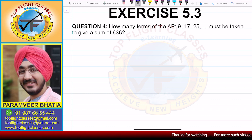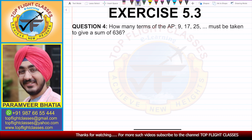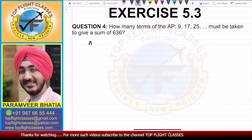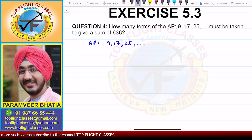Question number 4 says: how many terms of the AP 9, 17, 25 and so on must be taken to give a sum of 636? The AP given is 9, 17, 25 and so on.